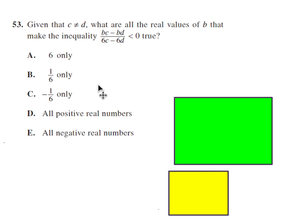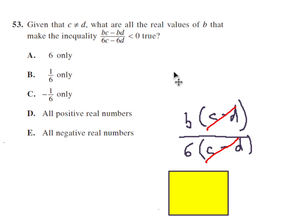Number 53 is a very similar problem. They only mention that c does not equal d because if they were equal, the denominator would be equal to 0 and we know that's not allowed. We have this expression right here is less than 0 and that means that it's negative. I notice right away I see a c and a d up top and a c and a d on the bottom. So I'm thinking that I have to factor out the common factor for each one. So factor out of b, we get this. Factor out of 6, we get this. And now those cancel and we're left with b divided by 6 is less than 0. In other words, b divided by 6 is negative. Well, for this to be negative, b has to be a negative number. So 53 would have to be E.